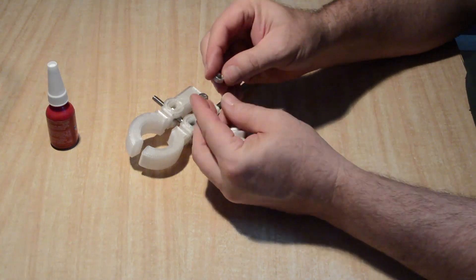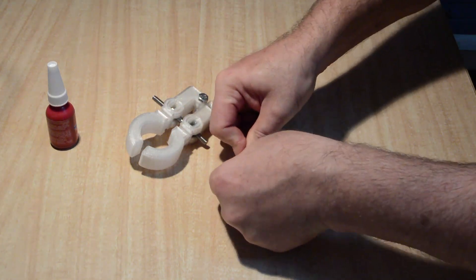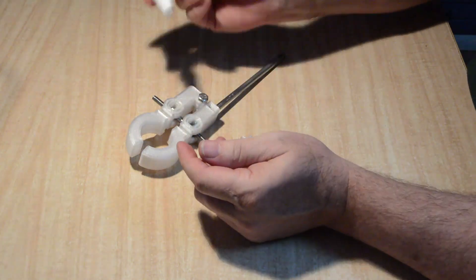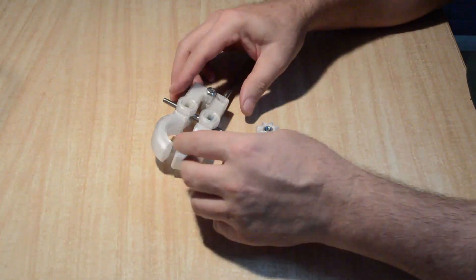Insert a hex nut into the knob. Again, a hex nut is used to give a more robust attachment, rather than just using the plastic for the thread. And finally, with some loctite or similar glue, fasten the knob onto the threaded rod to finish the adjustment screw.